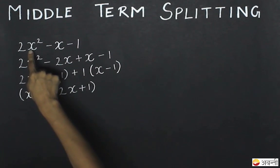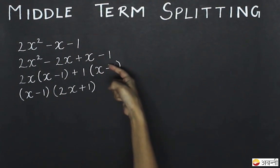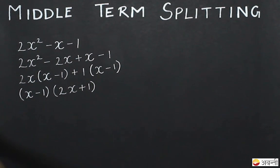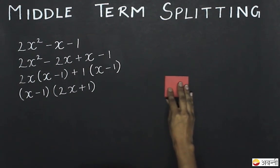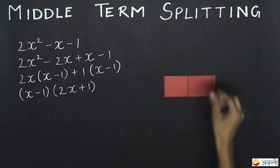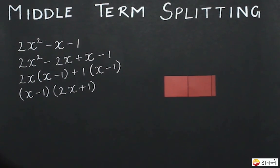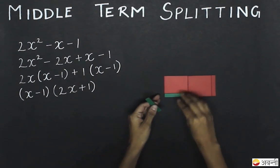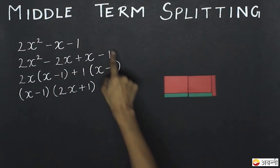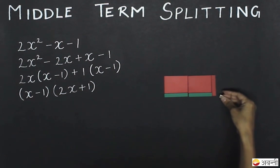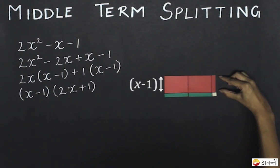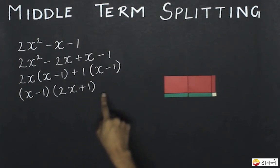Now I have the expression 2x squared minus x minus 1. After middle term splitting, I get 2x squared minus 2x plus x minus 1. I will first represent the positive terms: since I have 2x squared, I take two such squares. To represent x, I take one strip and keep it next to these squares. For minus 2x, I take two strips with their green sides and keep them along the sides of the squares. To represent minus 1, I take one unit square and keep it on the strip. The remaining red area is x minus 1 into 2x plus 1, which is our expression.